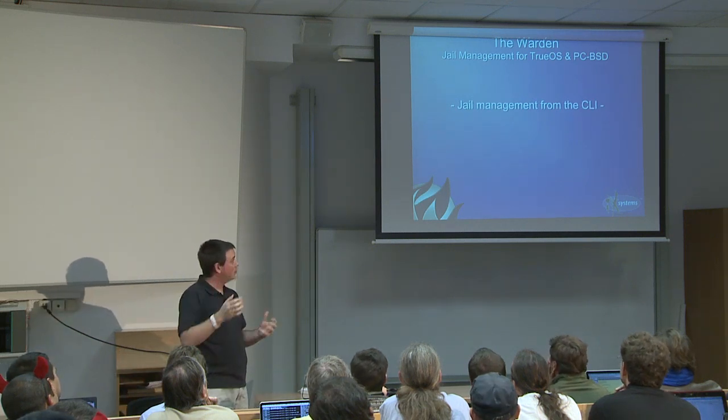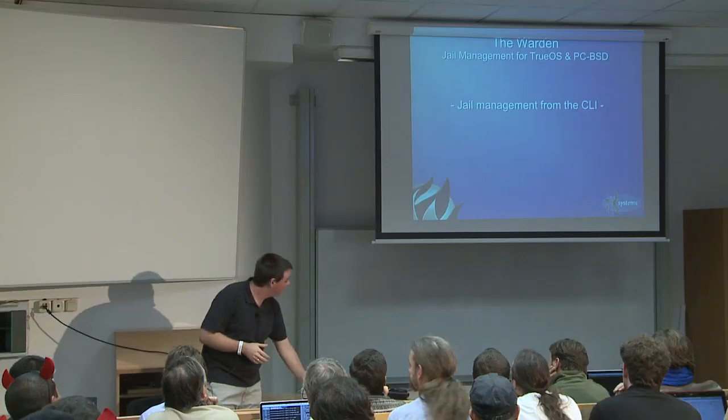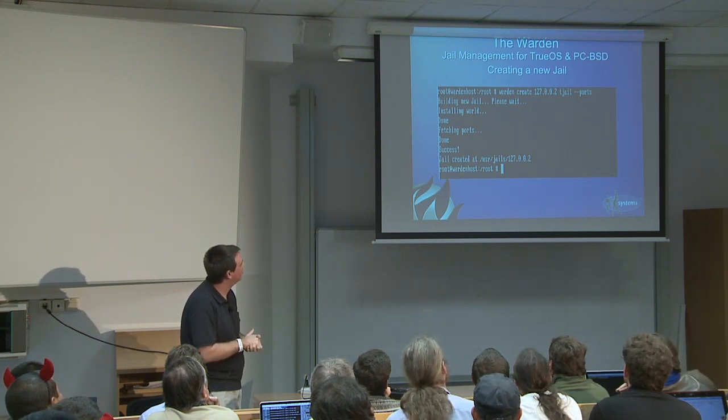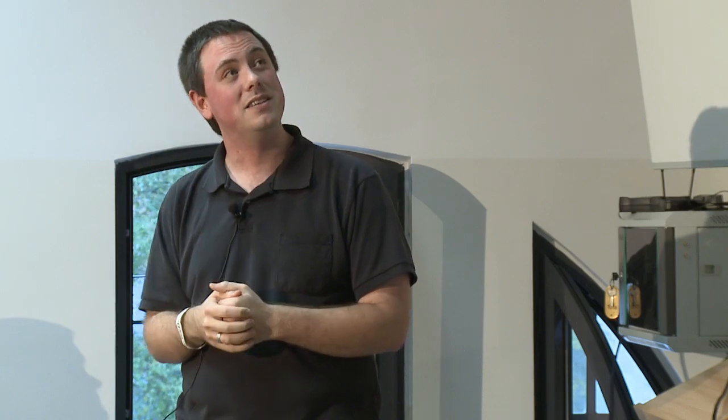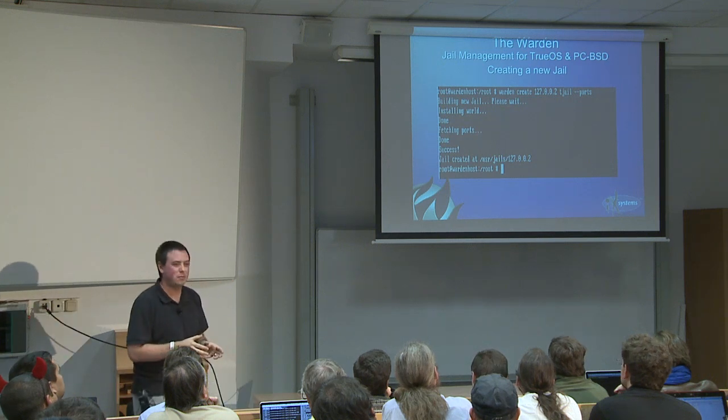At this point I'm going to show you what some of this usage looks like so you can get an idea of the syntax. This is on a TrueOS box. What I'm doing here is running the command 'warden' — that's the main command for everything, and you just pass it a variety of flags. In this case I'm telling it we want to create a new jail. In 9.1 the jails are specified by IP address, so that's going to be your unique name at the moment.